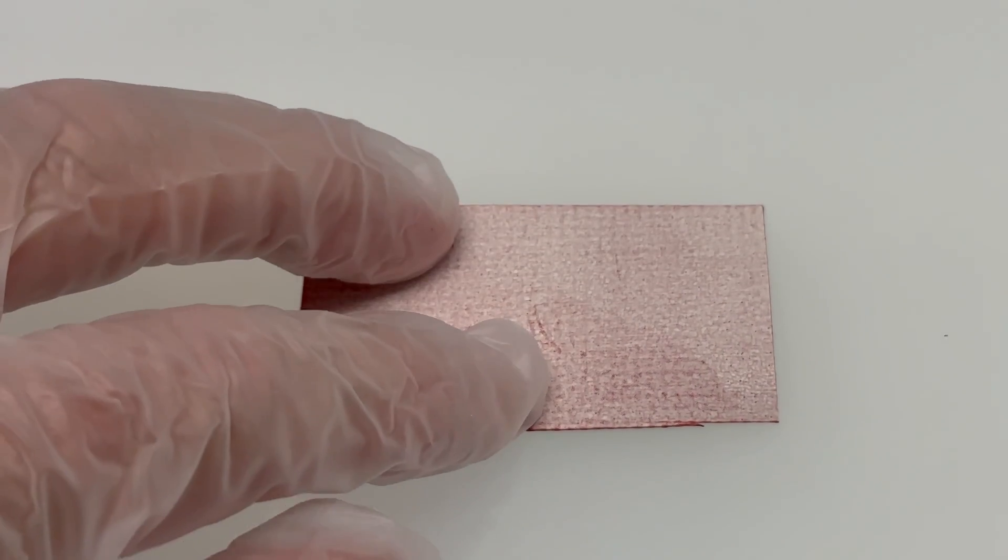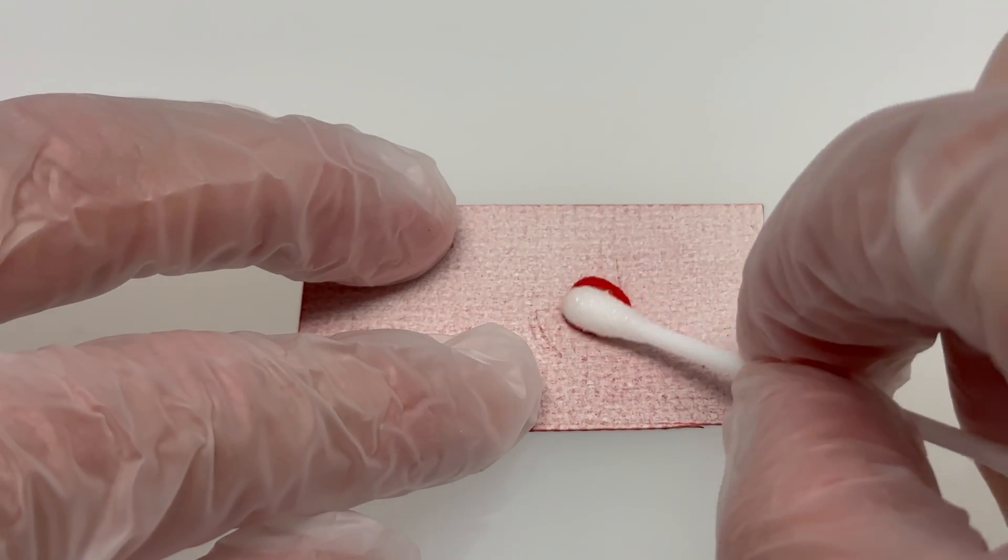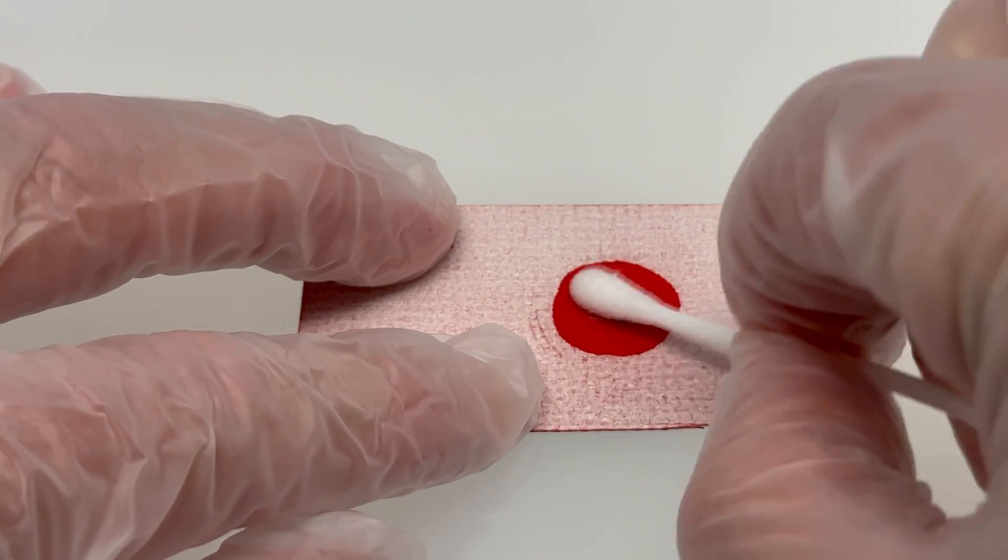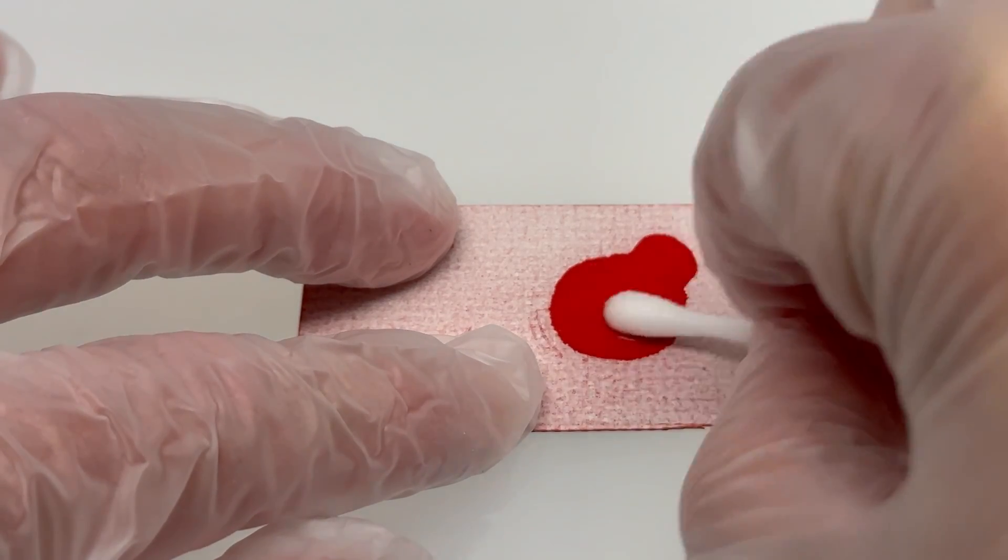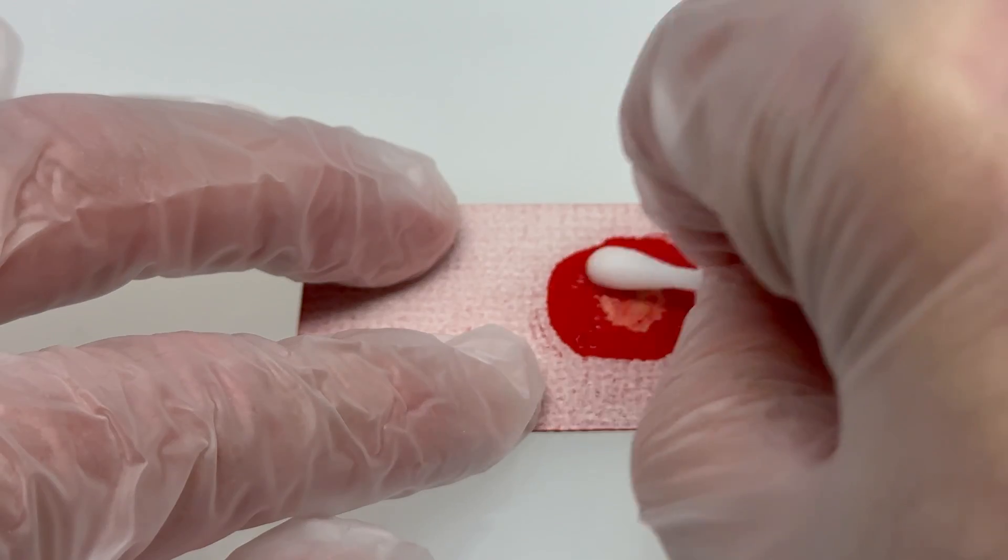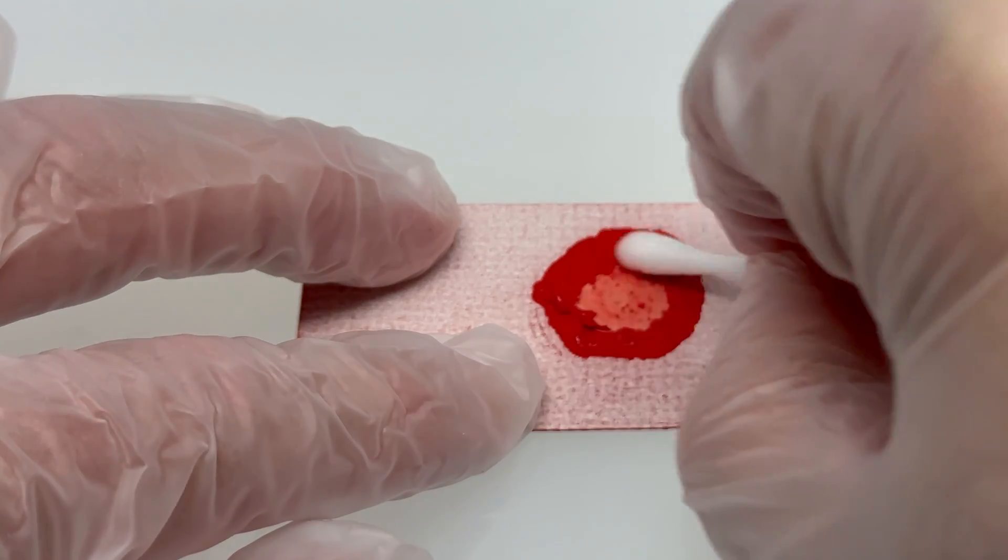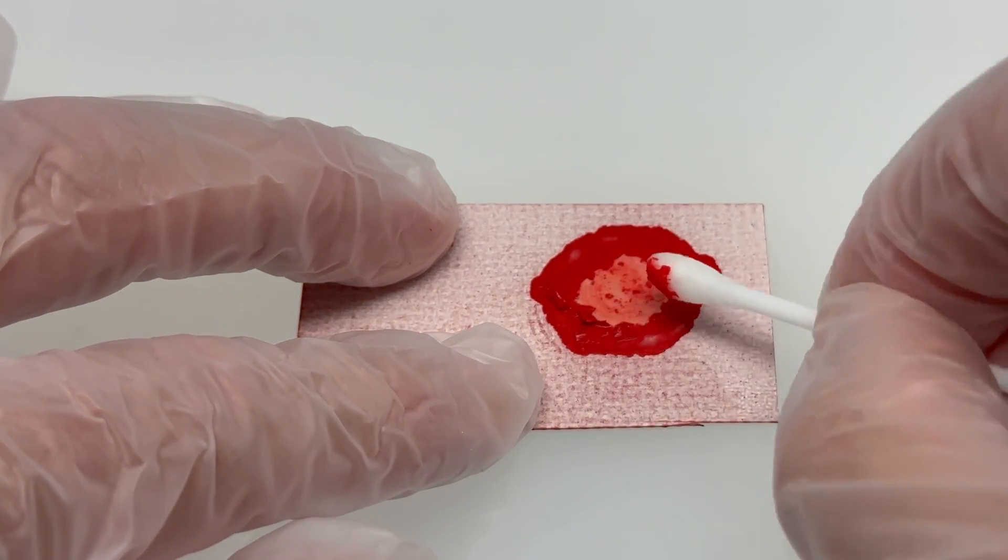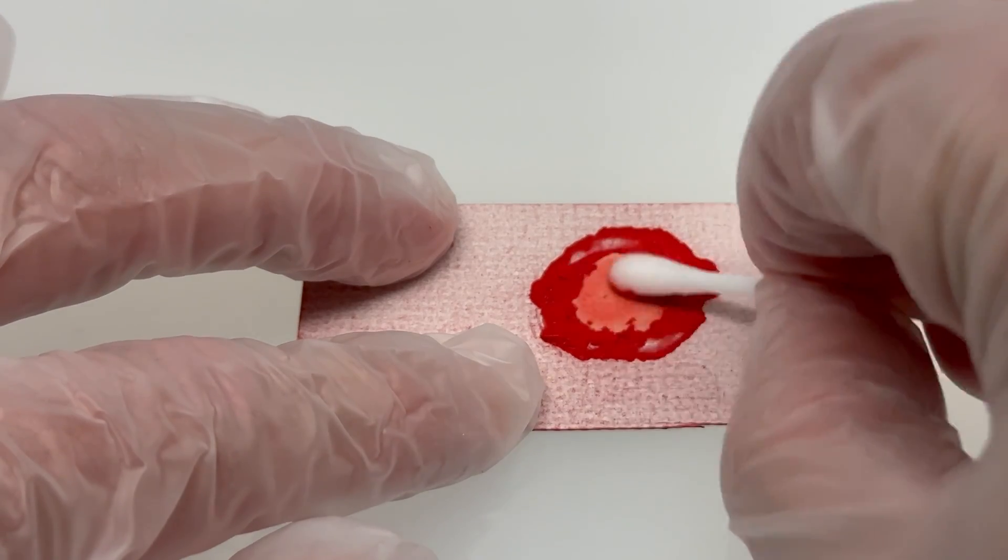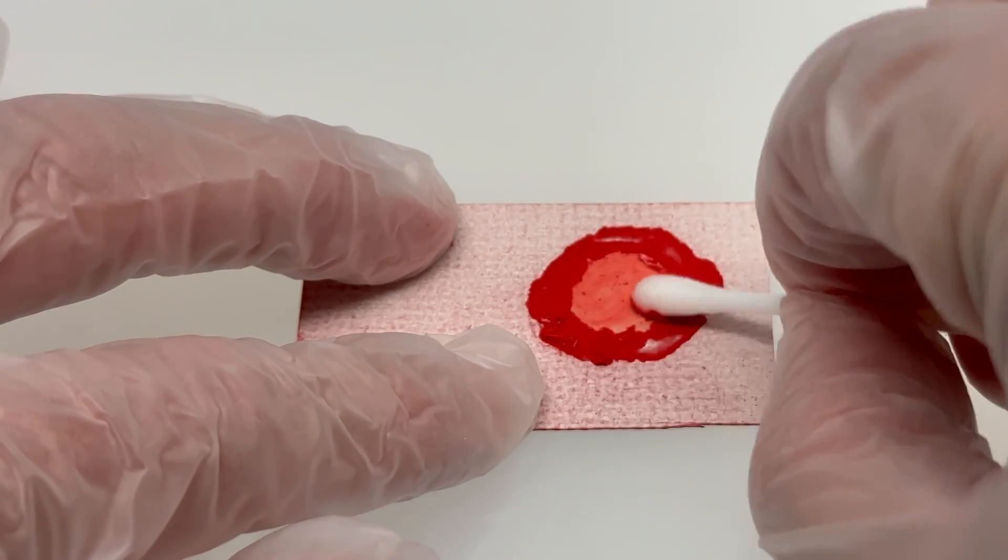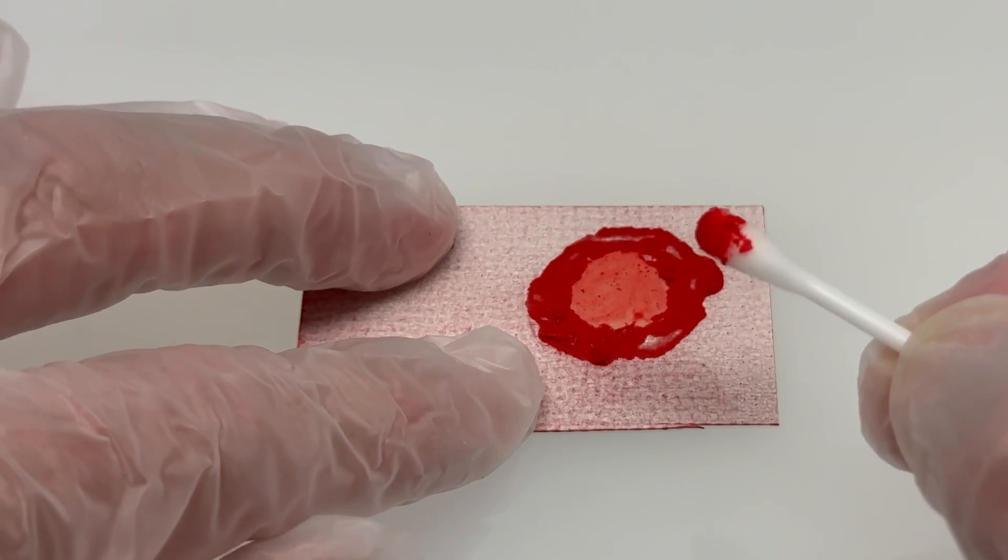To test my new idea of how the bloody bath mat works, I first rubbed a sample of the bloody bath mat with a q-tip soaked in hexane. When I did this, it looked like something on the surface dissolved away. I'm guessing this was the polymer coating. I also collected quite a bit of red dye on the surface of the q-tip. These results seem to me to be consistent with what I think is going on.